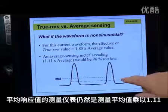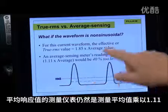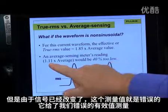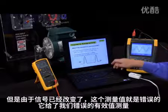the average responding meter takes the average, multiplies it by the same 1.11, but because the signal has changed, this is now the wrong number and it's giving us the wrong RMS measurement.